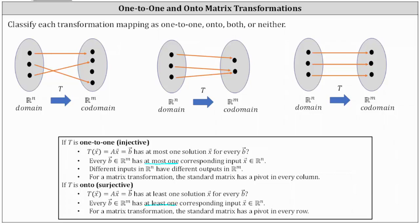Looking at the mappings, remember we can think of vectors as points. We have four vectors in our M, three of which have one corresponding input, and the fourth vector has zero corresponding inputs. So because all four vectors in our M have one or zero corresponding inputs, this does satisfy the requirement for a one-to-one transformation, where every vector in our M has at most one corresponding input vector X in our N.